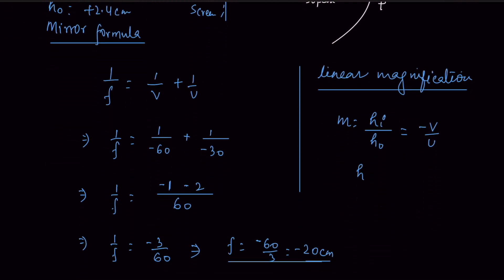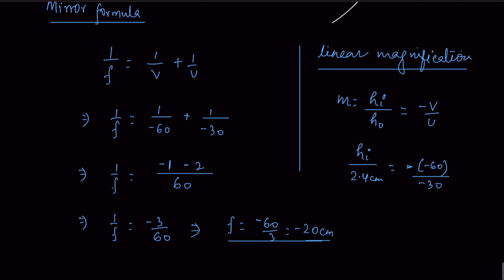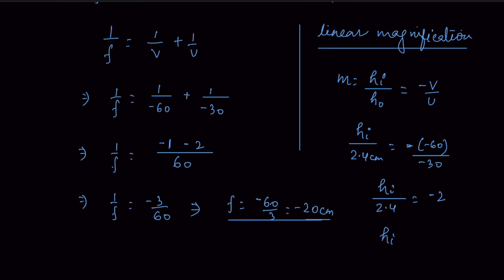The height of image is not known. Setting up the equation: height of image divided by 2.4 = −(−60)/(−30) = −2. Therefore, height of image equals minus 4.8 centimeters.